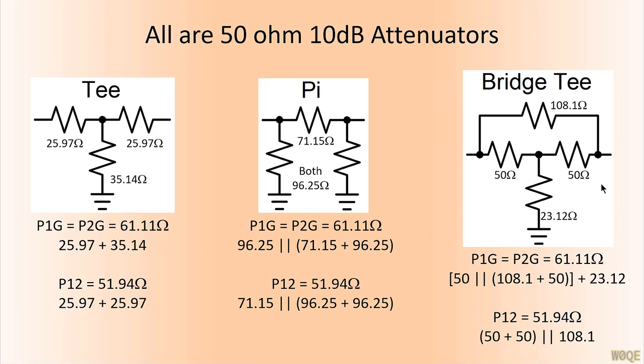For the bridge T, which is less common, the bridge T's claim to fame is the fact that two of the resistors are 50 ohms in it and sometimes it gives us nicer values to use. But in the bridge T case, we can think of these two resistors for pin one to ground. We think of these two resistors as being in series, as one value. That's in parallel with 50 ohms and then plus the 23.12 ohms as shown in the equation here.